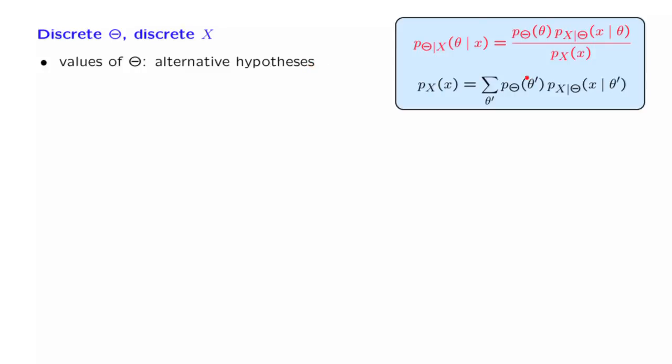We have in our hands the Bayes rule, and we have seen plenty of examples. So instead of going through one more example in detail, let us assume that we have a model, that we have observed the value of x, and that we have already determined the conditional PMF of the random variable theta.